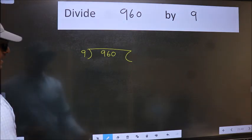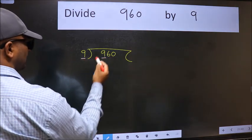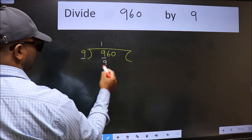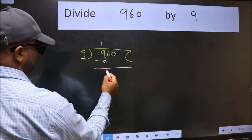Next, here we have 9 and here 9. When do we get 9 in 9 table? 9 once, 9. Now we should subtract. We get 0.